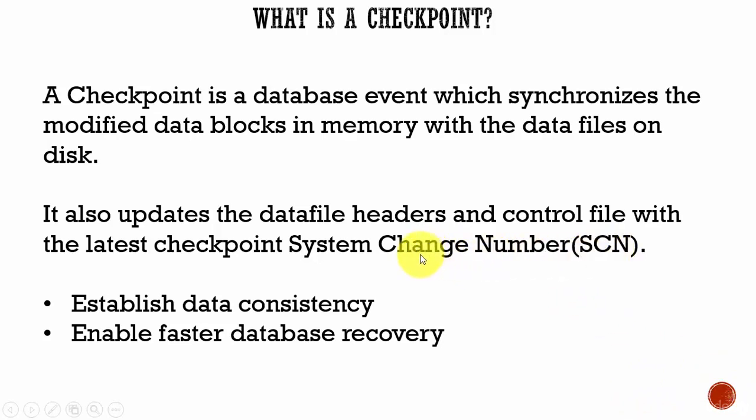You can think of the system change number like an Oracle clock which increments every time there is a commit. It's a sequential number which Oracle keeps incrementing for every commit.